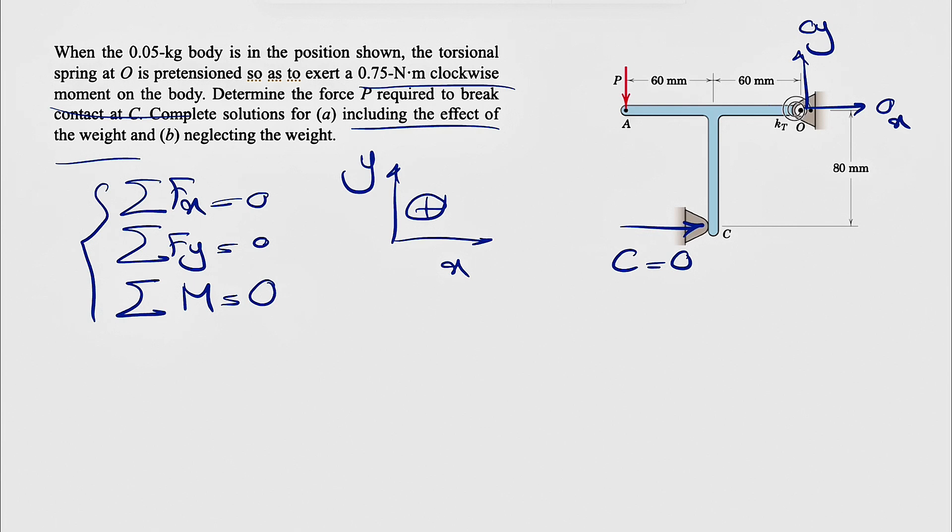We have the clockwise torsional moment on the body from the spring. That's going to be clockwise and 0.75 newton meter. And the last thing that we have is just the weight of this body, which is going to be mass times acceleration of gravity, which we know g is 9.81 meter per square second on earth. And we don't need to worry about the exact center of gravity or center of mass for this body. We know because of the symmetry, it'll be along this line.